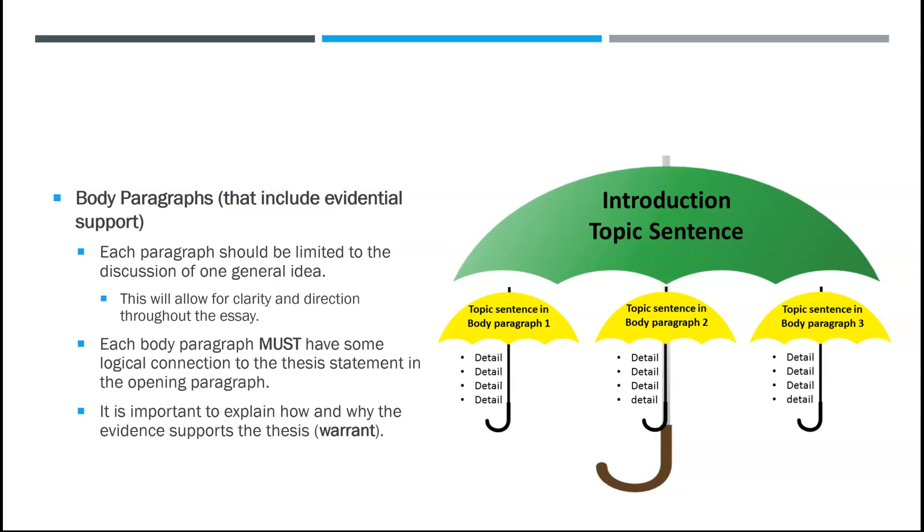By sticking with one discussion of a general idea per paragraph, you allow for clarity and direction throughout the essay. You're not, like we talk about the darts analogy, you're not just throwing a handful of darts at a dart board and hoping something sticks. No, you're throwing precisely one at a time and you're making sure it lands in the bullseye each time. Each body paragraph must have some logical connection to the thesis statement in the opening paragraph. If you find yourself writing about something in a body paragraph that doesn't connect to your thesis or you have not made that connection clear, then you are not doing your paper effectively. You're not writing your paper effectively.